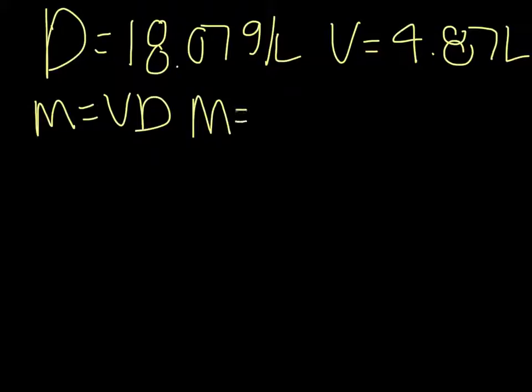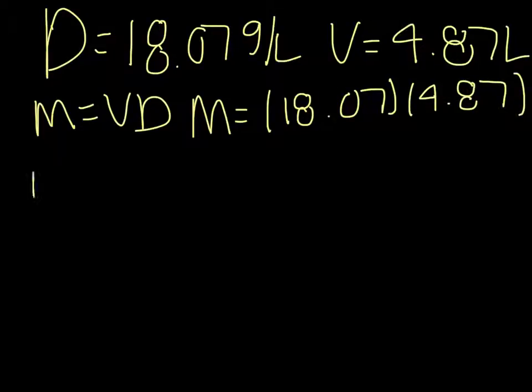When you plug in your numbers you get m equals 4.87 times 18.07. Once you multiply those together you get m equals 88.001 grams.